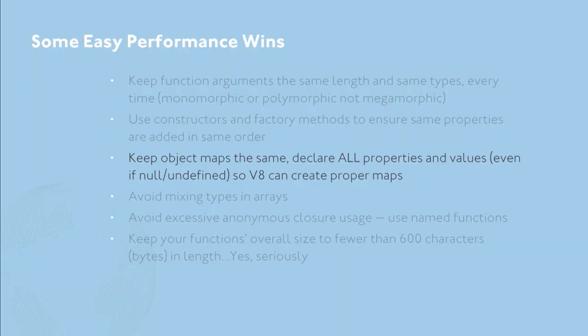When you're creating new objects, it's useful to use constructors and factory methods to make sure that the properties are actually added in the same order. What's happening behind the scenes with V8 is it creates what's called a map, and that map is what is referenced every time it needs to refer to an object and create a new instance of it. If that thing changes frequently, it can't be optimized. When you're creating objects and adding your properties and values to them, you should add all properties and values from the very first time, even if those values are in fact null or undefined. If you look at Node source code at the EventEmitter class, you'll see this in practice, because V8 only has to create that map one time and can refer to it every time going forward.